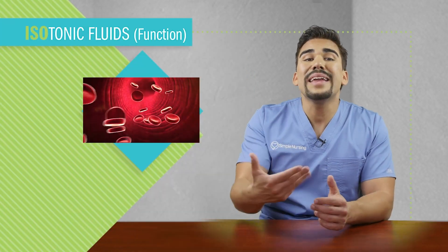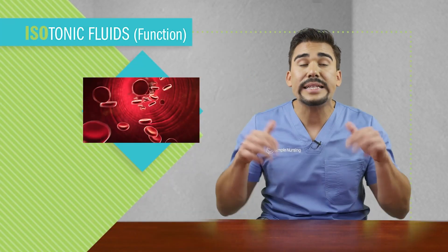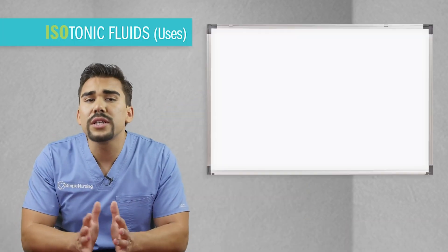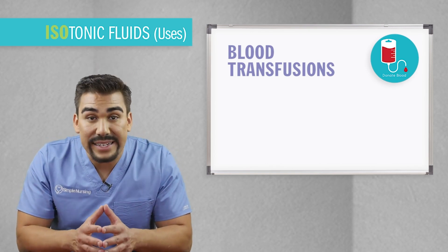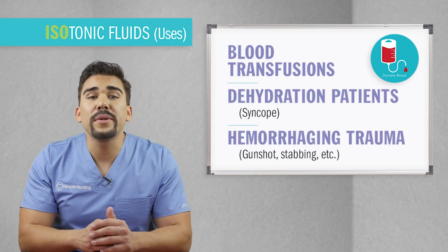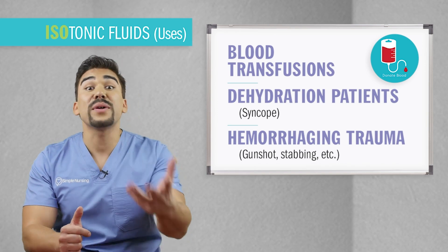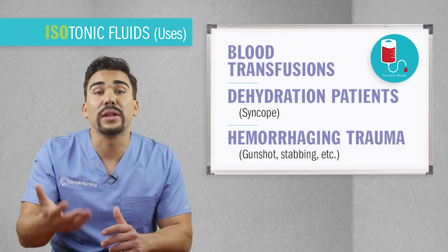What are the functions of isotonic solutions and why do we use them? The main function is to add fluid to the intravascular spaces inside the blood vessels — to rehydrate the body and increase blood volume. Isotonics are used for fainting or syncope, usually found in orthostatic hypotension or low blood pressure when standing, which is commonly a dehydration problem. Also used with traumas with acute blood loss like gunshot wounds or stabbings. In this case we give isotonics as a bolus — a rapid, wide-open infusion. Isotonics are also used for blood transfusions and dehydrated patients.